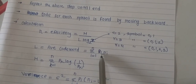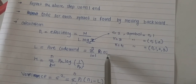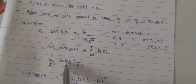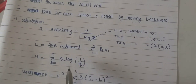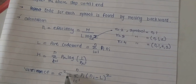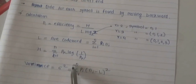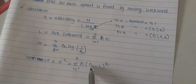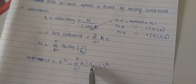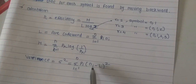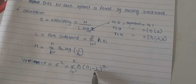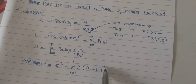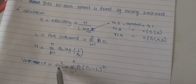The average code word length L-bar is the summation from 1 to n of probability times its code length. H is the entropy as usual. The variance is sigma squared, equal to the summation of probability times the quantity (code word length minus L-bar) squared. Variance should be as low as possible.